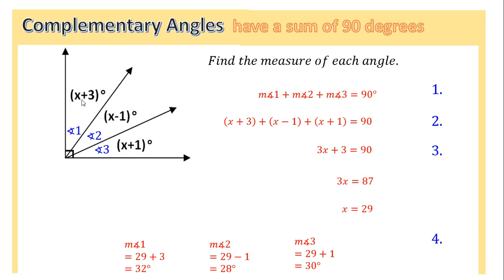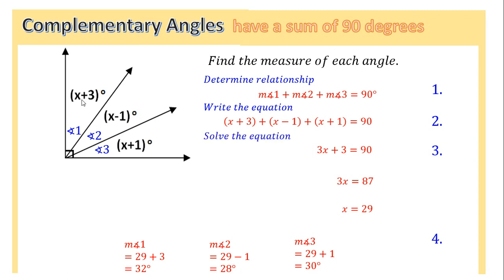So what are those steps? Come up with the relationship — and you have to know your definitions, properties, and theorems to do that. This is usually the hardest part. After you know the relationship, substitute the expressions in to write your equation. Then use your algebra skills to solve the equation. Finally, take the solution and substitute it back in if the problem asks for the angle measures.